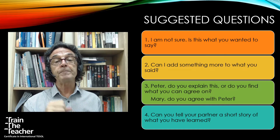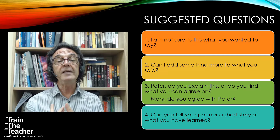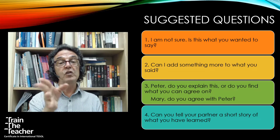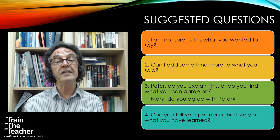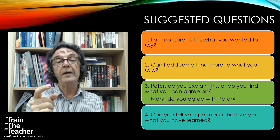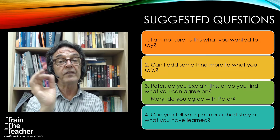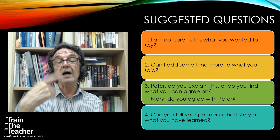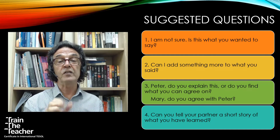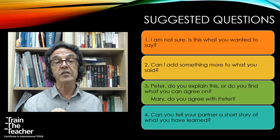If you've set a task but you're not sure learners have fully understood it, you could repeat it — or you could ask questions to make sure they knew the focus of the activity. You could say: 'Do you need to explain this to your partner, or do you need to find what you can agree on?' And then: 'Mary, do you agree with what Peter said just now?' — a simple but question-oriented way of checking your instructions.